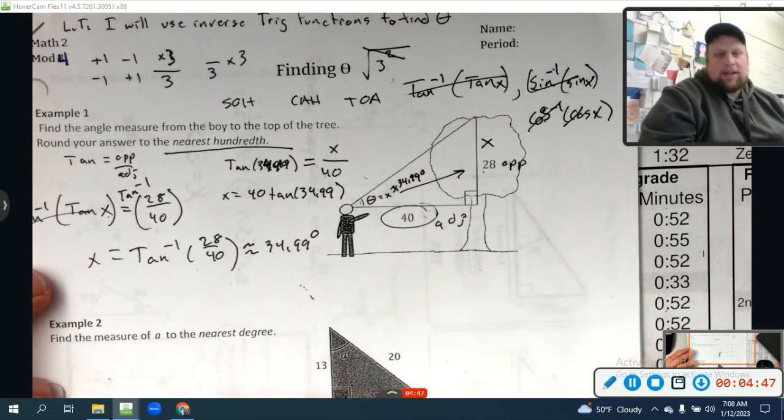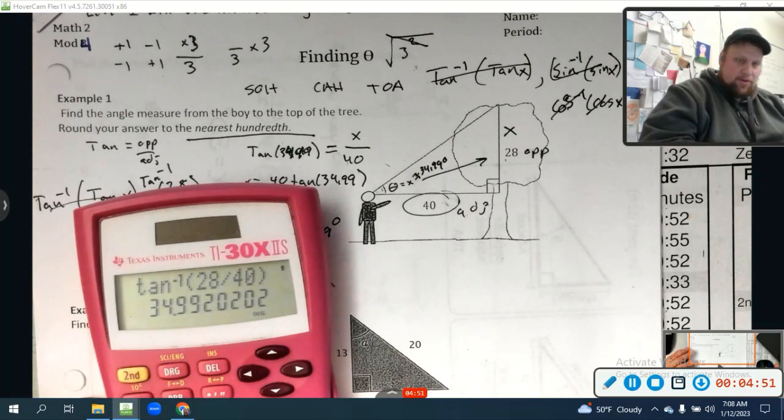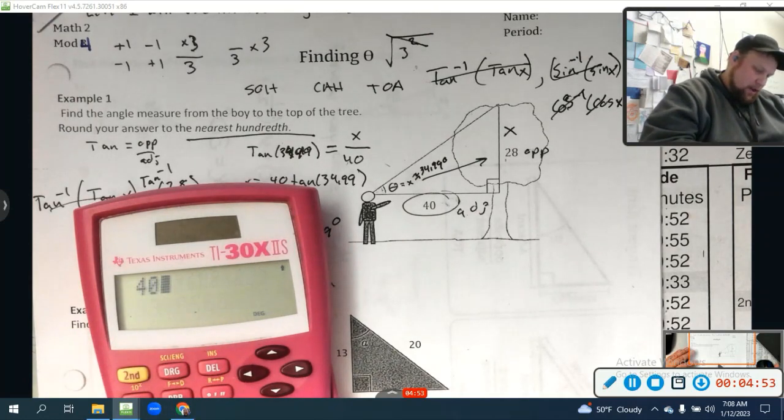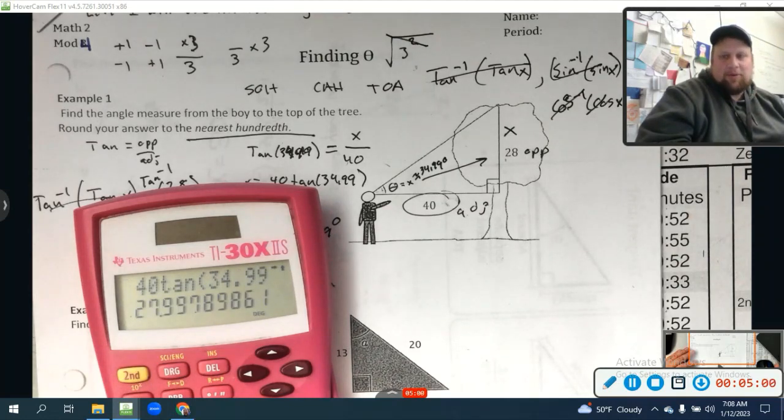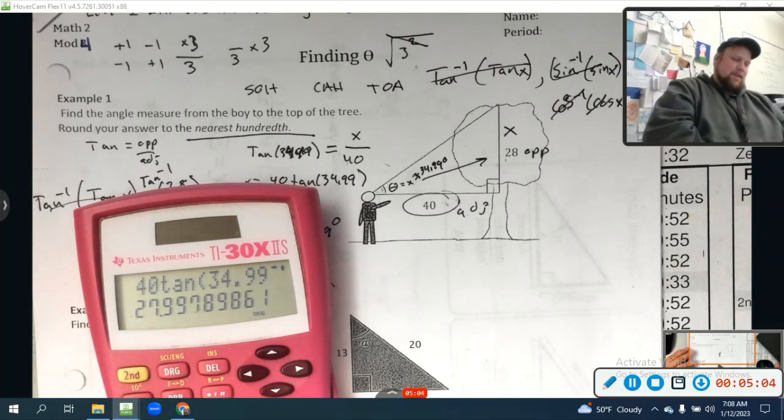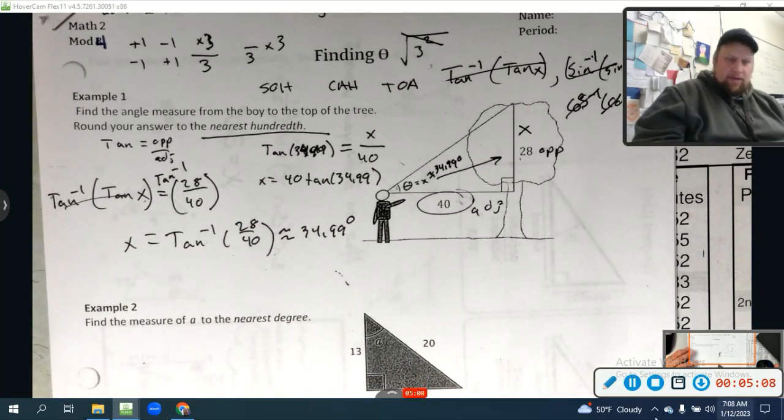Now, this isn't going to be exact because I had to round, but it should be right close to 28. So let's try this. 40 times the tangent, 34.99. 27.99, which would round to 28. How about that? See, it works.